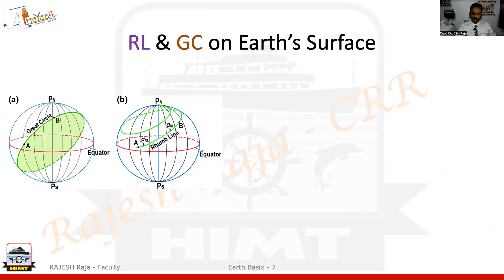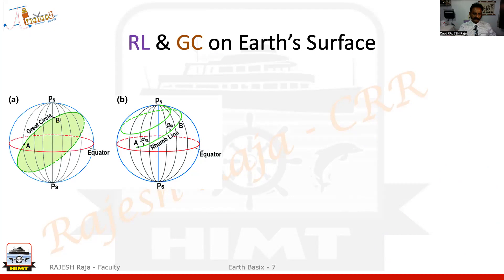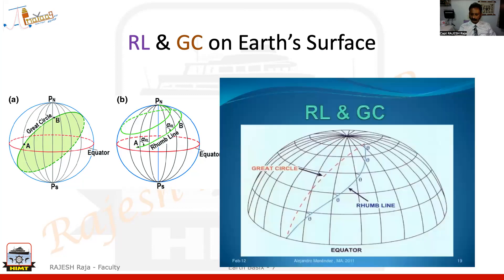Let me show you a couple of pictures. You will see the great circle — the plane of which cuts the earth into two equal halves. If I take two points A and B and draw a great circle course, it is a straight line on the earth. But if you draw a rhumb line course, where it cuts all the meridians with equal angles (shown as theta), you will see it will continue spiraling and go towards the poles. This is the difference between rhumb lines and GC.